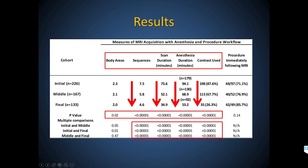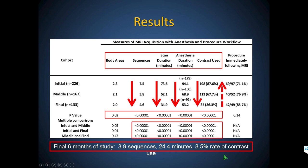Beyond reducing contrast, this forced us to change our guideline. We were ordering scans with and without contrast habitually — it was in our guideline. In the last six months of the study we changed the guideline, notified all stakeholders, and ended up using contrast in only 8.5% of patients. Those scans took about 24 minutes on average with only about four sequences.